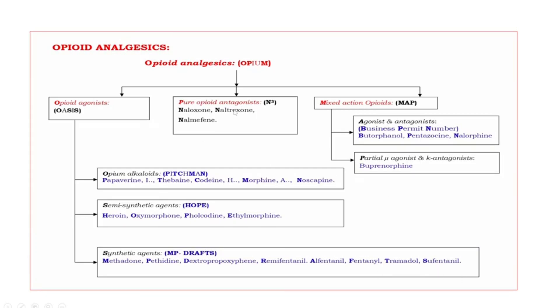Next, pure opioid antagonists. The drugs are N-cube. First N — naloxone. Second N — naltrexone. Third — nalmefene.